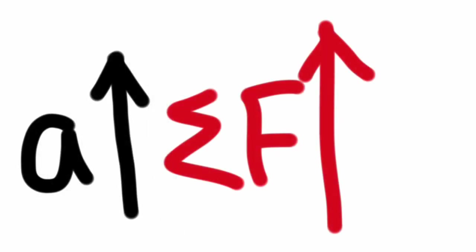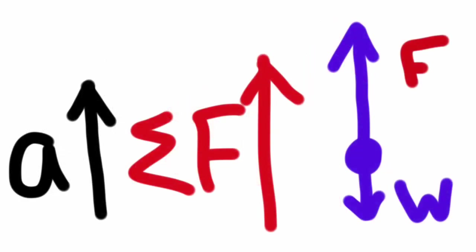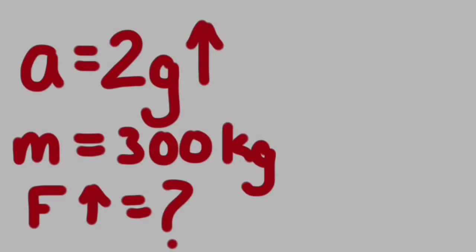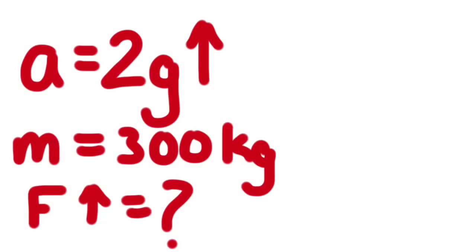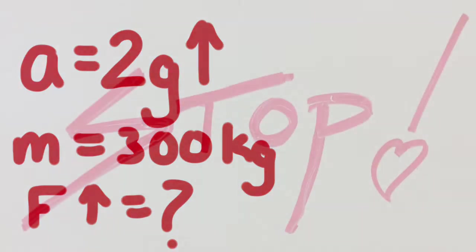Or if acceleration's up, the net force is up and the up force is bigger than the weight. Quick problem if you want to test yourself. Acceleration is 2g upward. Mass is 300 kilograms. Find the up force.